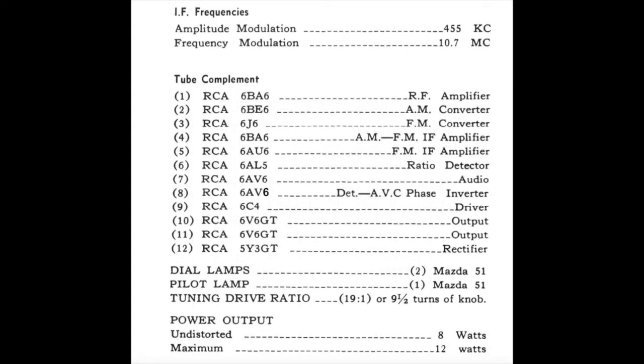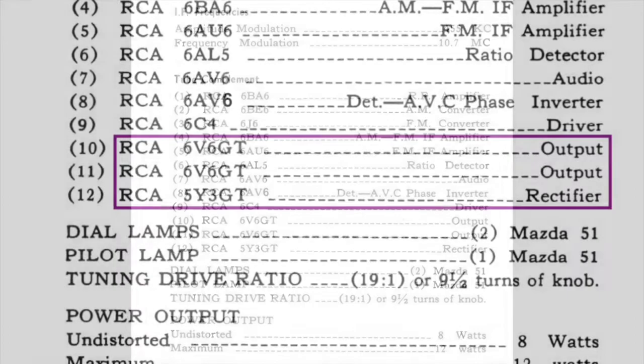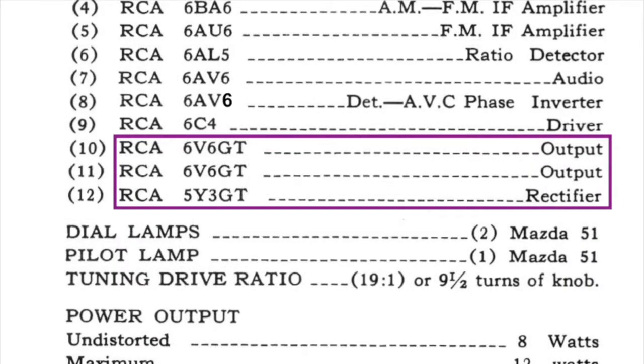Next I look at the tube complement. I want to know if there will be any difficult to obtain or expensive tubes. The tubes in this radio are common, and even the power tubes that are most likely to be bad, the 5Y3 rectifier and the 6V6 output tubes, are still easy to obtain.